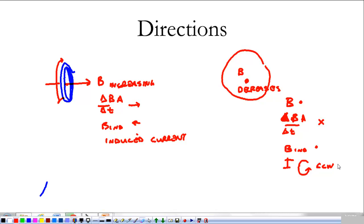We will work more and more with this idea of direction. The thing that we need to remember is that the induced current produces a magnetic field that opposes the change in flux. That is the very important part of this.